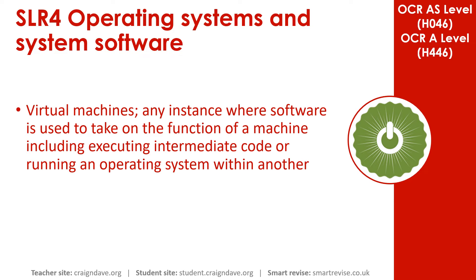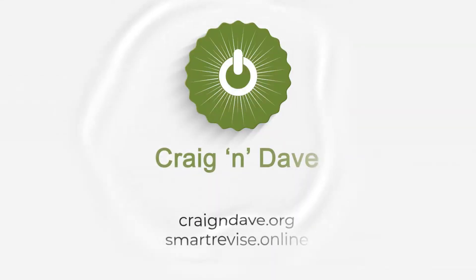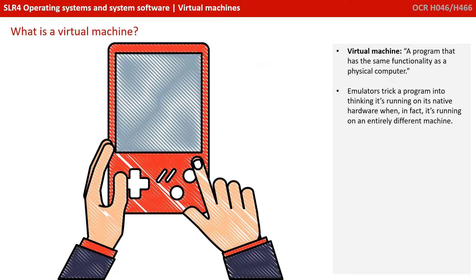In this video, we discuss what a virtual machine is. A virtual machine is a program that has the same functionality as a physical computer. Emulators are an example — they trick a program into thinking that it's running on its native hardware, when in fact it's running on an entirely different machine.